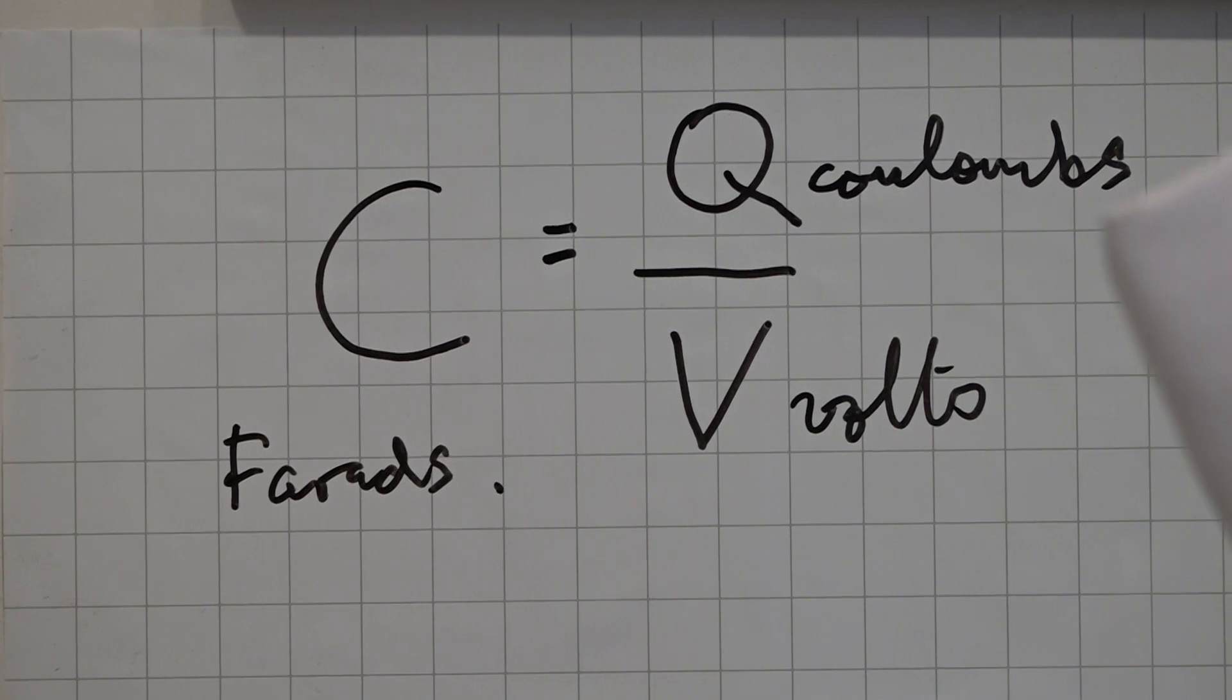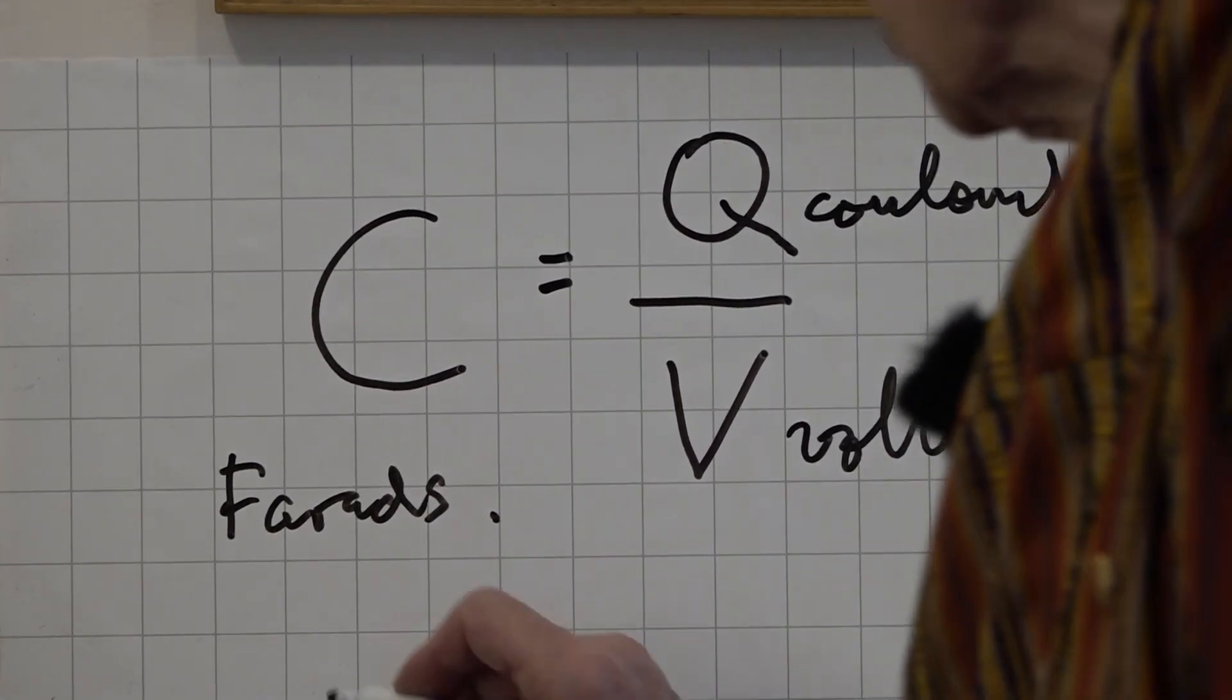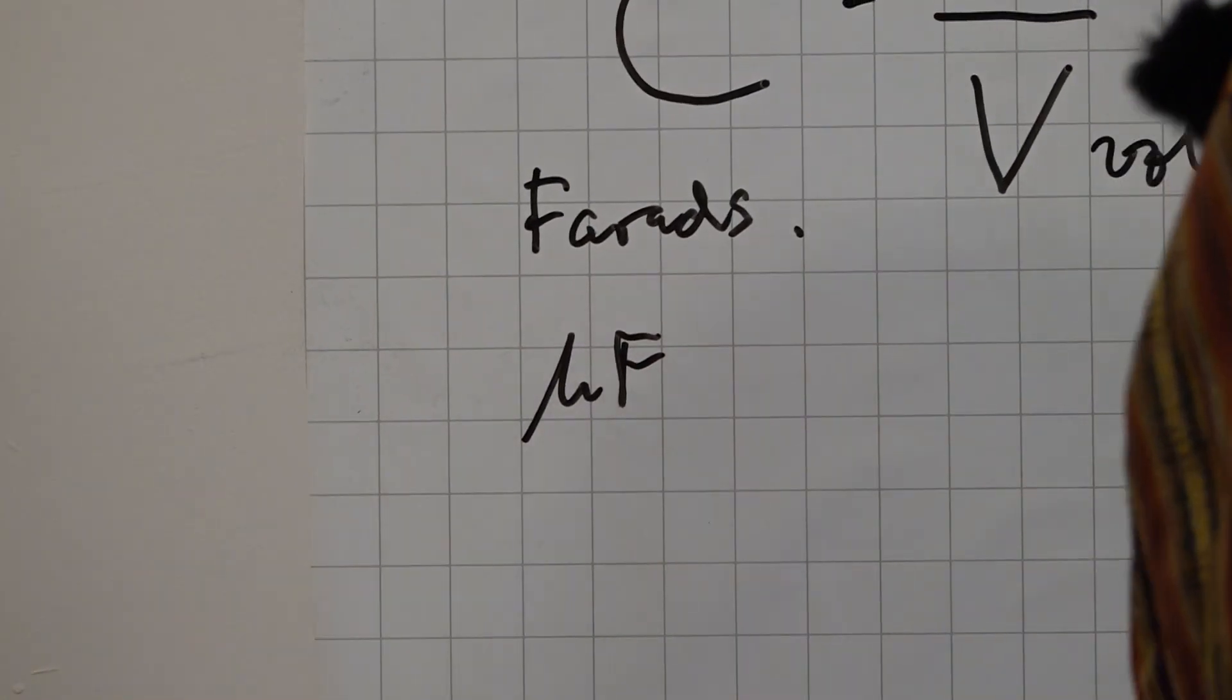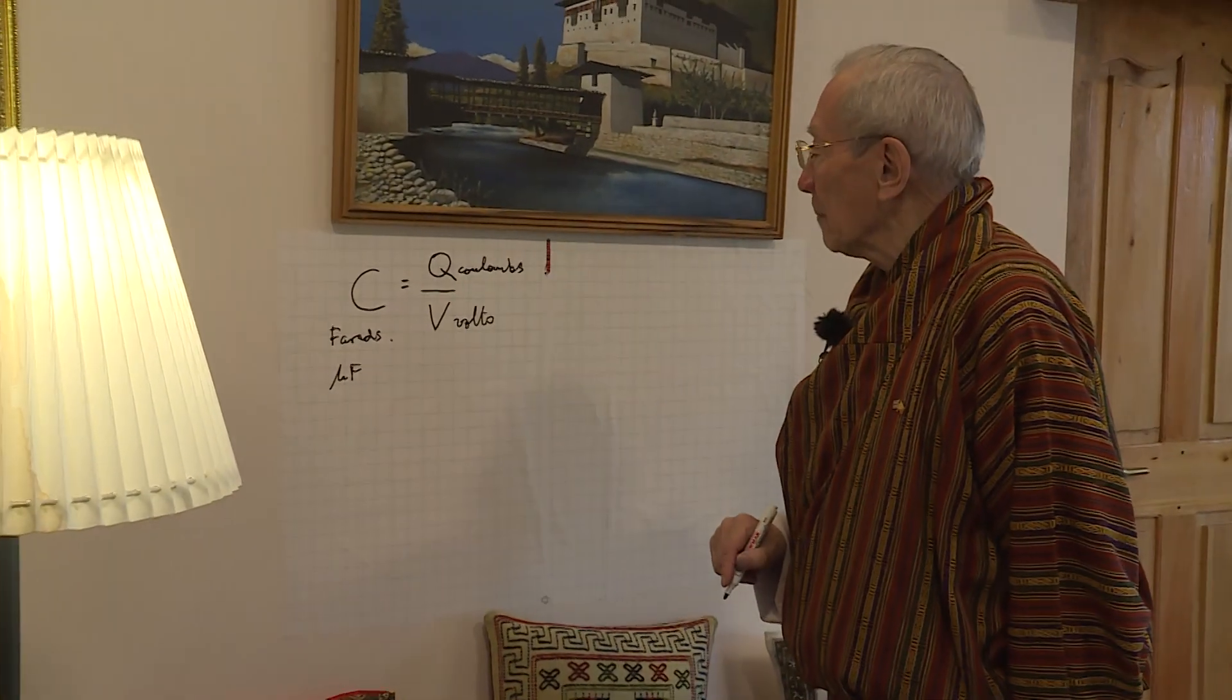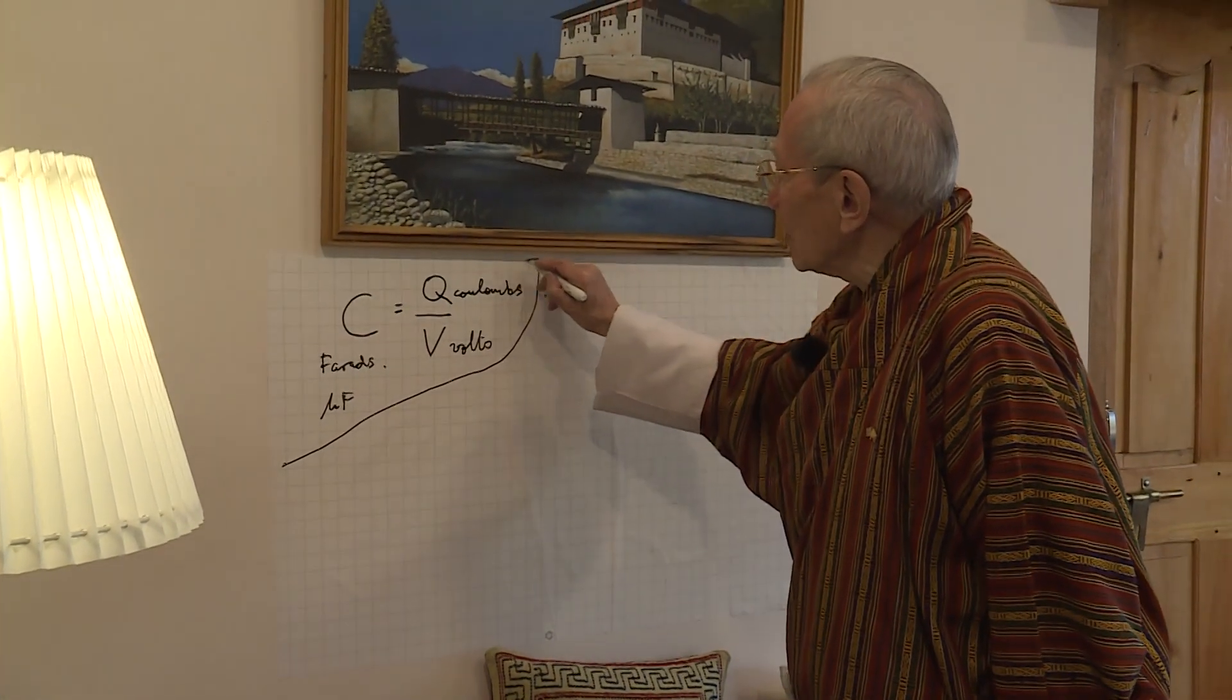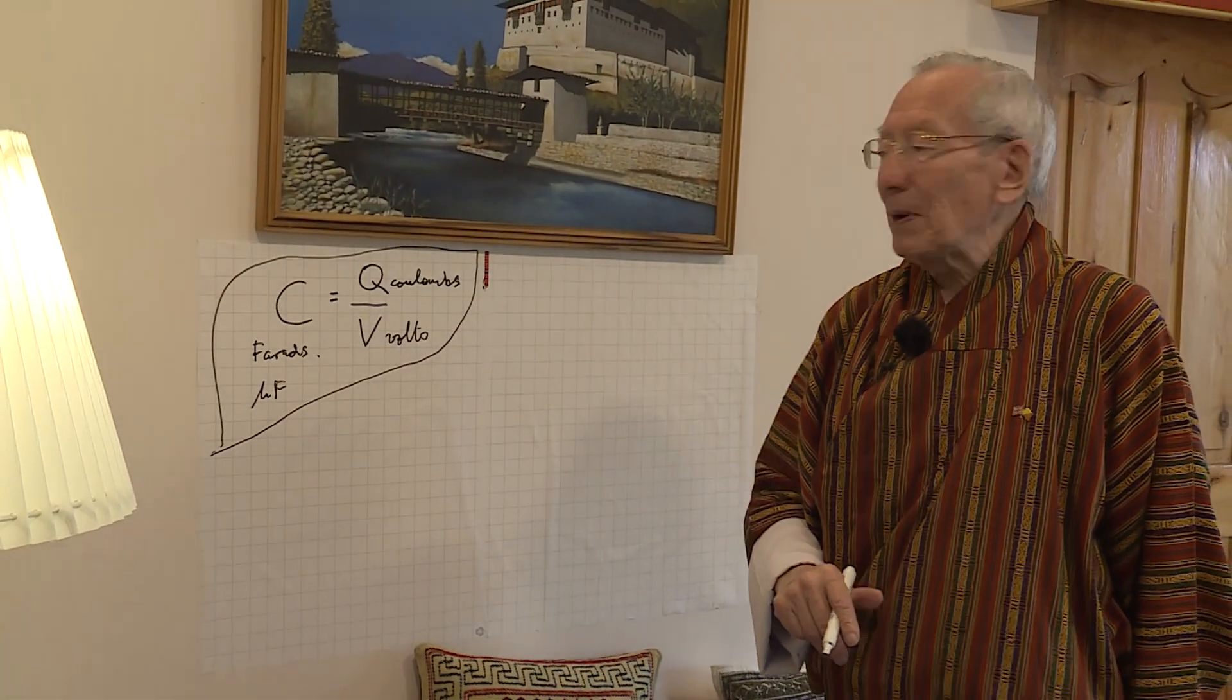And remember, usually we're dealing with tiny little capacitances, so we have to remember microfarad. The mu in front of the F means micro, which means a millionth of a farad. So that's how you define, that's how you work out the capacitance of a capacitor.